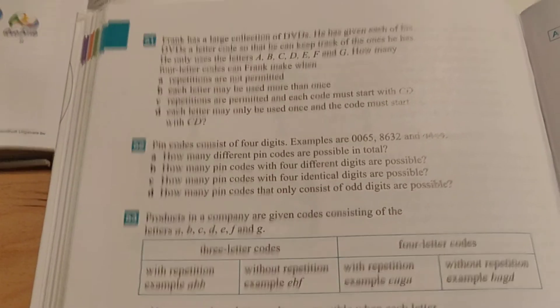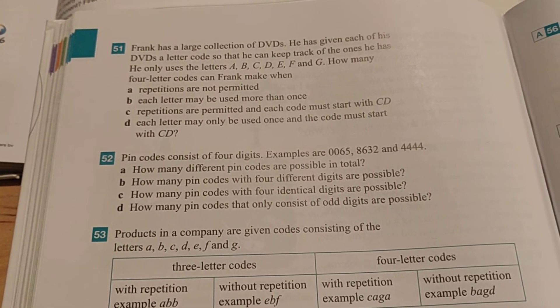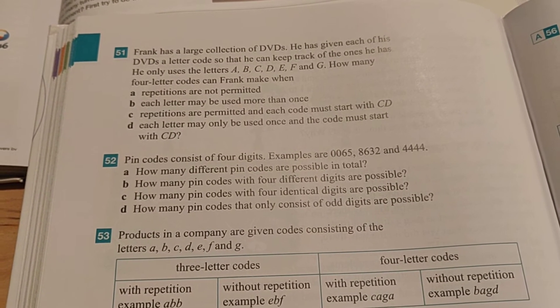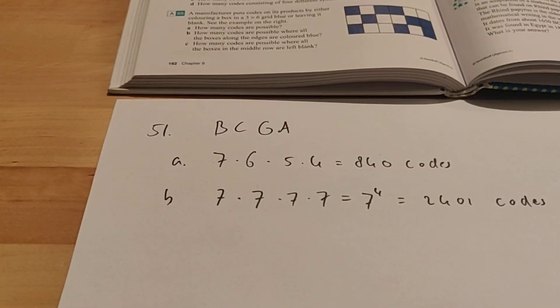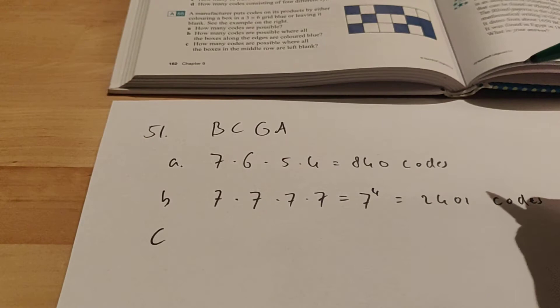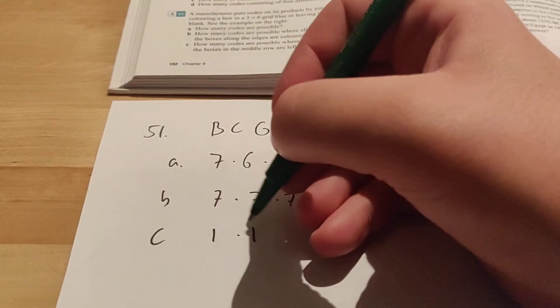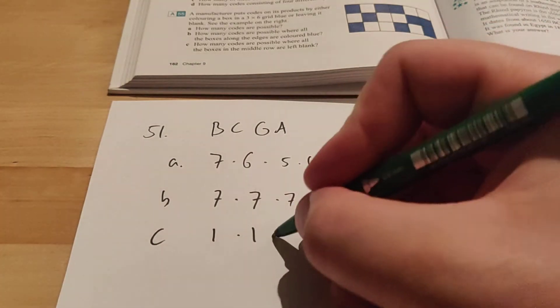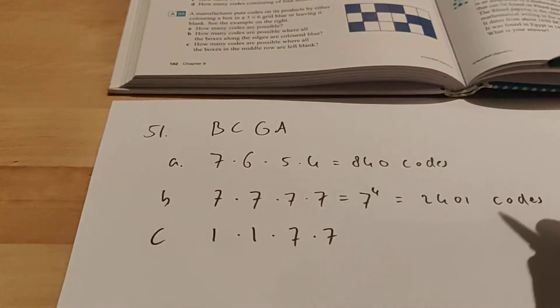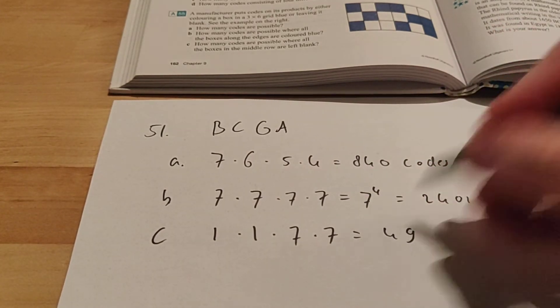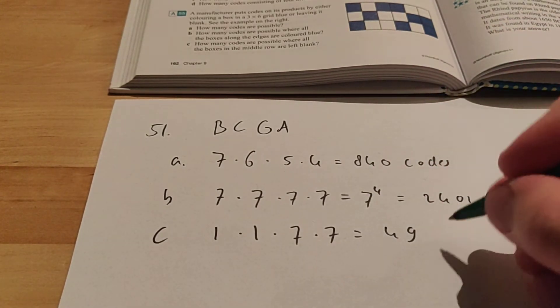Moving on to exercise C. It says repetitions are permitted, but each code must start with CD. So that means that if you want to make a code, then the first, it has to start with CD. So here he only has one option. This has to be a C and this has to be a D. But after that, he can choose any letter that he wants, because repetitions are permitted according to the exercise. So here we get 49 codes.